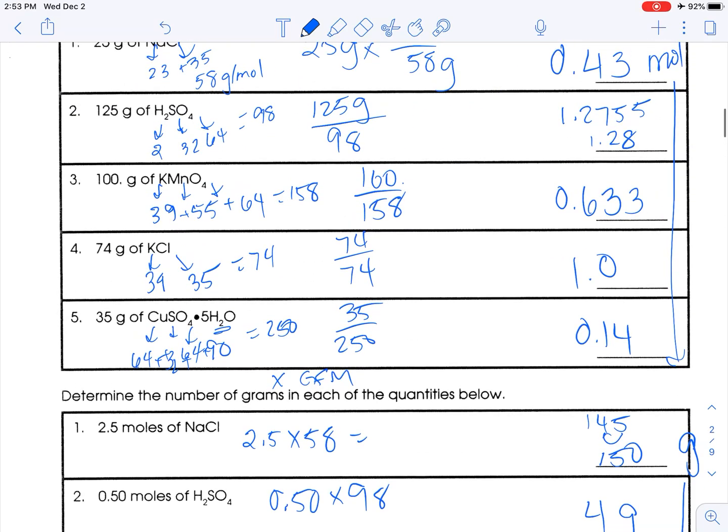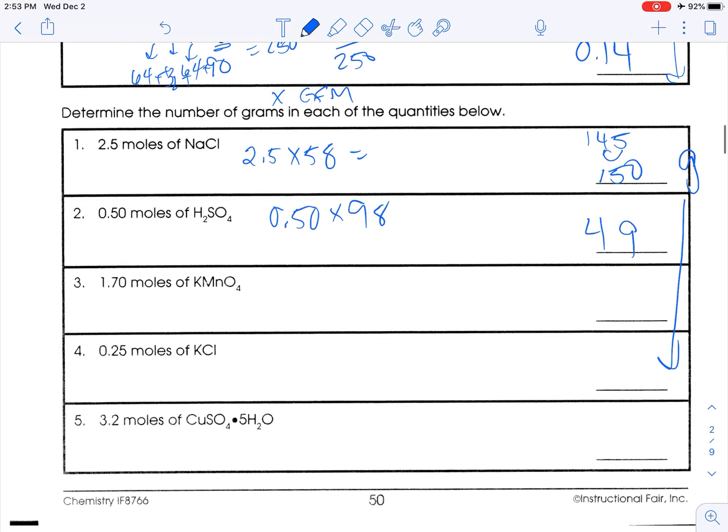The potassium permanganate is 158 grams per mole. So 1.70 times 158. We want three sig figs in our final answer. If you didn't have to round to sig figs, I'd accept that. But three sig figs would be 269.